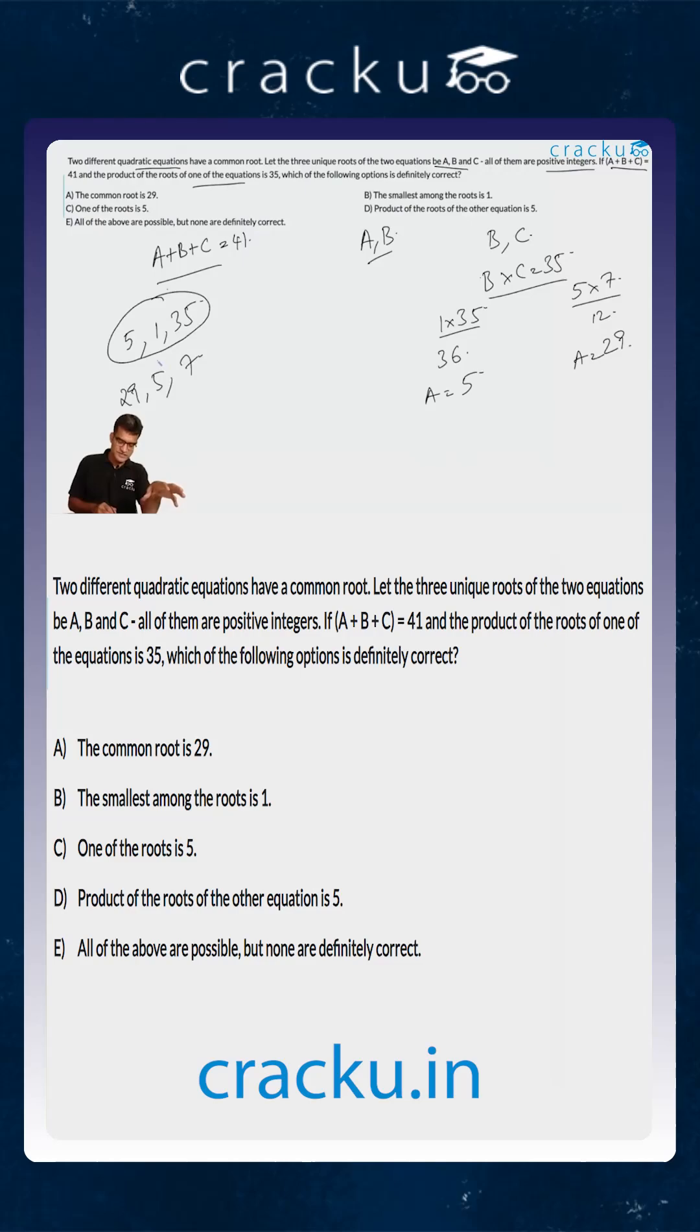What we know is that there are only two possible cases. In the first case, the three unique roots are 5, 1, and 35. In the second case, the three unique roots are 29, 5, and 7.